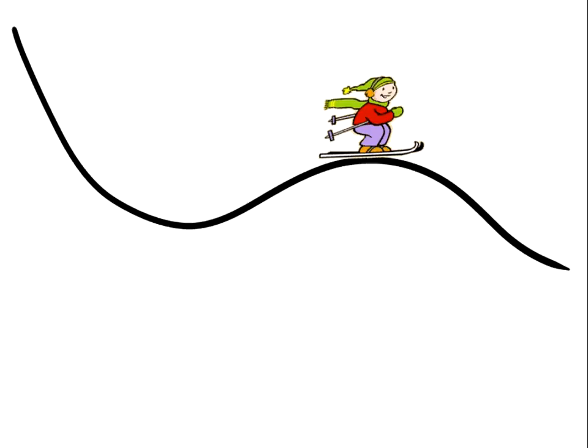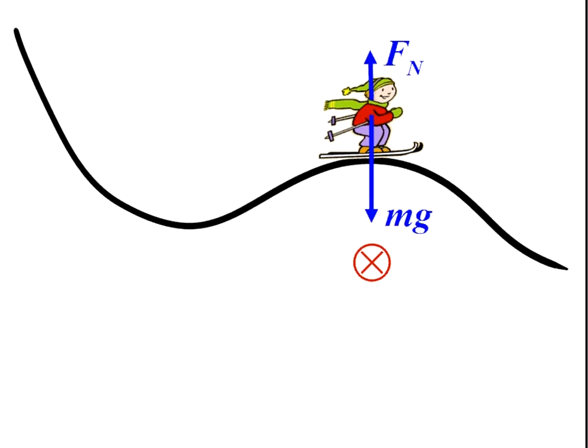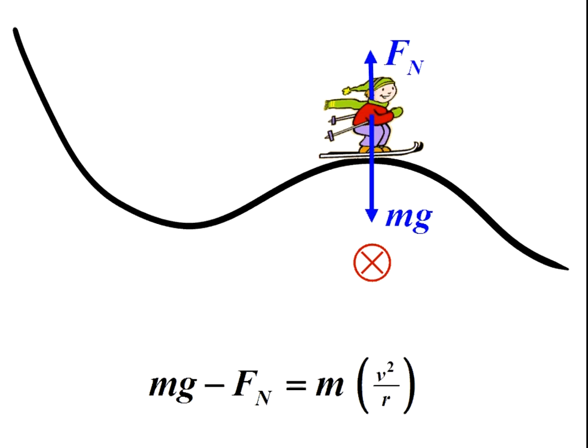A skier, for example, going over a small rise is actually following a circular path, and their two forces are the normal force up and the mg down. We're going to call towards the center of the circle positive, so mg is positive here and the F_net is actually mg minus F_n.